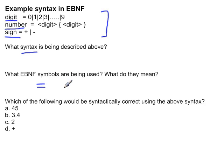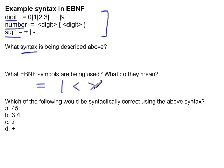The EBNF symbols we have are: equals, which means 'is defined as'; the OR symbol; angle brackets, which denote something previously defined such as digit; and curly brackets, which denote zero or more repetitions.